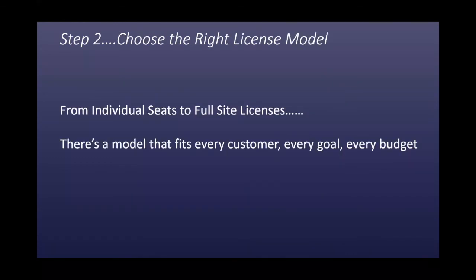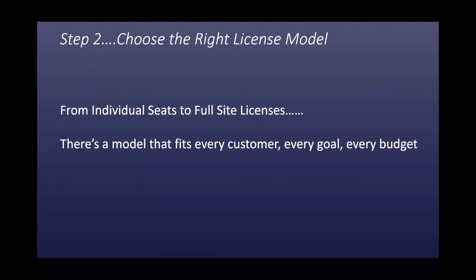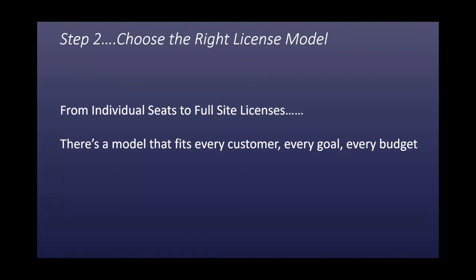Step two is to choose the right model — the model that is right for your school, from individual seat licenses to full site licenses. We have customers that will integrate just a handful of seats, and we have customers that purchase site licenses that give every single student unlimited access to every single e-learning course, subject only to which courses their instructors choose to assign to them. License periods can run for two months, four months, six months, or 12 months, depending on the objectives of the school. The point is there is maximum flexibility to match any learning objective and any financial budget.